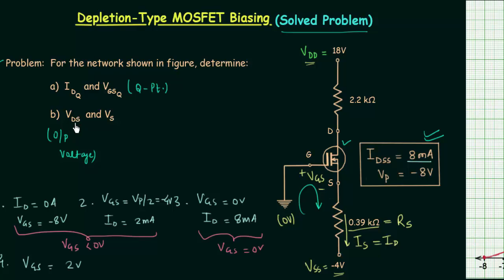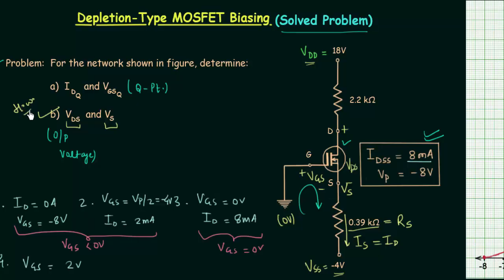In part B we have to find VDS and VS. To find VDS, apply KVL starting from 18V and ending at minus 4V. To find VS, which is the potential at the source terminal, apply KVL starting from VS and ending at minus 4V. The B part is a homework problem — post your answers in the comment section. From the next lecture we will start biasing of enhancement type MOSFET.